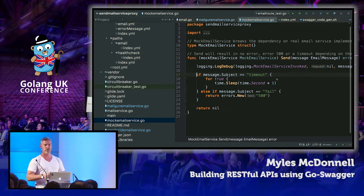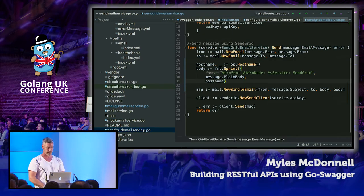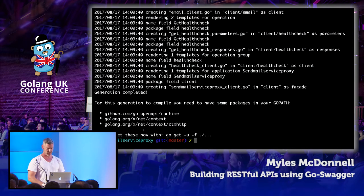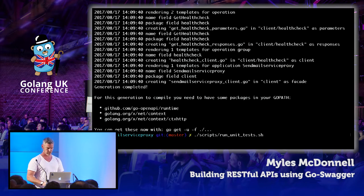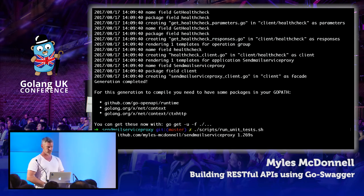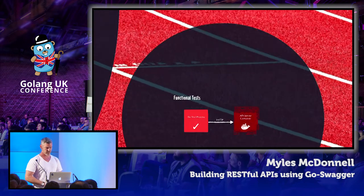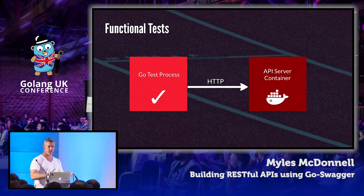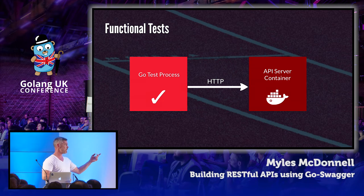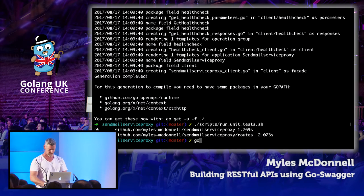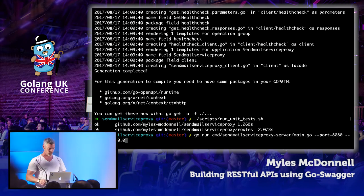Let's run the unit tests. All good. But that's only part of the story — we also want functional tests. Functional tests will run the tests in one process and run against an instance of the server running in another. I've shown that on the diagram as running the API server in a Docker container, but in the first instance in your development environment we'll run up the server on the host — no Docker involved.